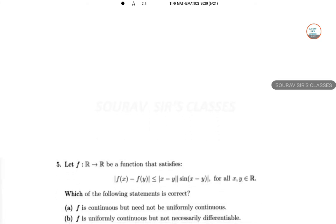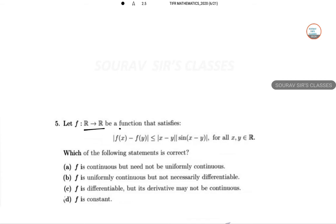Next, if f of r to r be a function that satisfies this f x of y x minus y sin x minus y. Then which of the following statement is correct? Continuous, uniformly continuous, differentiability, uniform continuity. These are the stuff we have to check. So let's see.